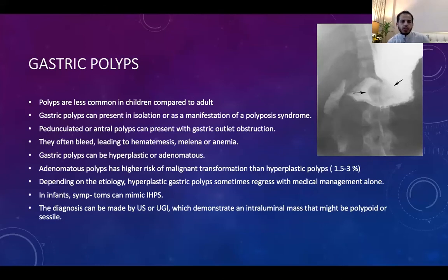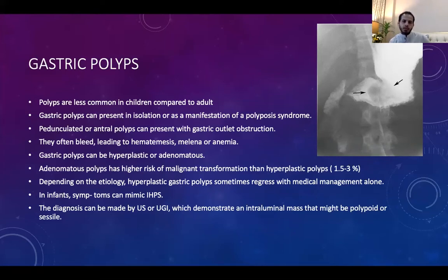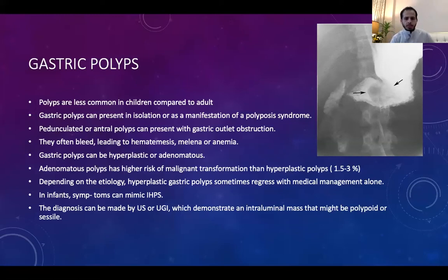Another differential diagnosis of gastric outlet obstruction is gastric polyp. Less common in pediatrics than adults, it can occur as part of polyposis syndromes or as an isolated feature. Polyps can be pedunculated or sessile. A pedunculated polyp can originate higher in the stomach and prolapse down to obstruct the pyloric opening. Symptoms include hematemesis, melena, or anemia. Polyps can be hyperplastic or adenomatous — adenomatous carries a high malignancy risk. Diagnosis is by ultrasound or upper GI, demonstrating an intraluminal mass.